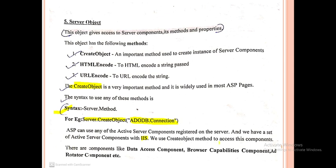We use the CreateObject method to access server components. There are components like the Data Access Component used for database connectivity, the Browser Capabilities Component, and the AD Rotator Component which is used for rotating advertisements. These are all standard ASP components.